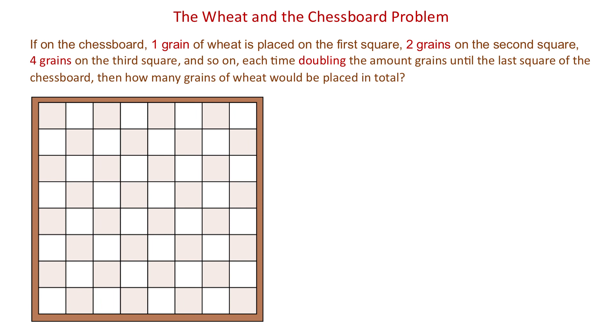We know that a chessboard has 64 squares. In the first square, we need one grain, in the second, two grains, in the third, four grains, in the fourth, eight grains, in the fifth, 16 grains, and so on.